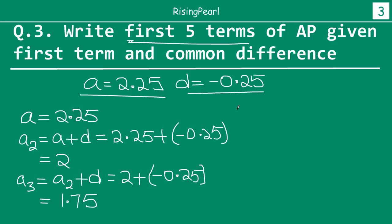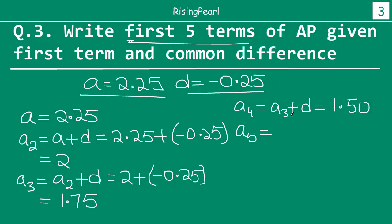So similarly A₄ will be A₃ plus d, that is 1.75 minus 0.25, which will be 1.50. And A₅, the fifth term, will be A₄ plus d, or 1.5 minus 0.25, which will be 1.25.